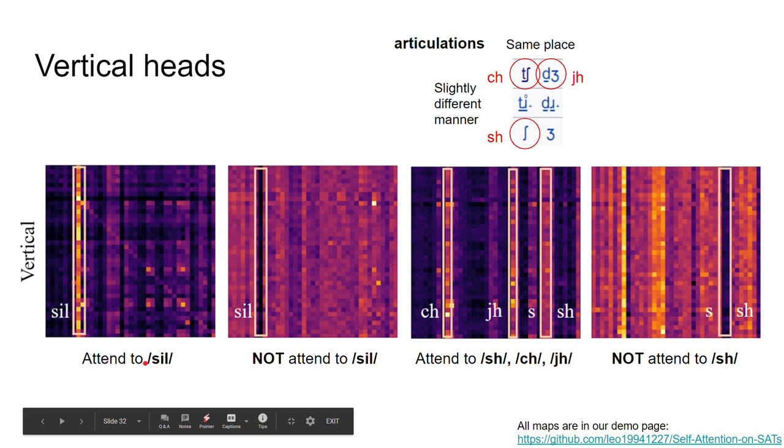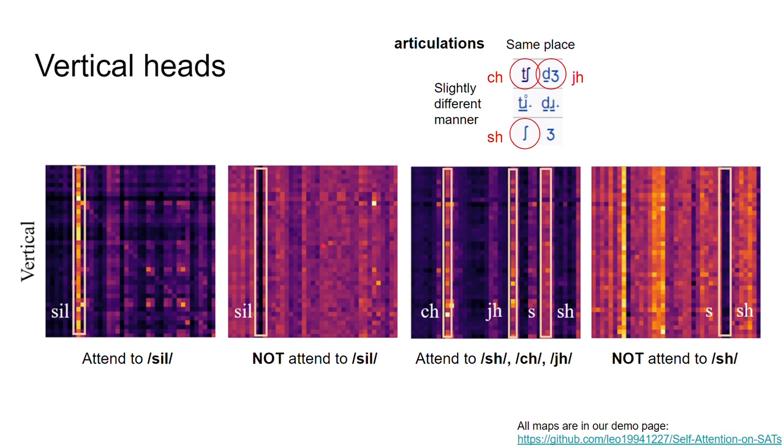As for vertical heads, there's a tendency for focusing on specific phonemes or neglecting them for all queries. The first head attends to silence and the second head always neglects silence. The third head attends to some phones which are articulated very similarly according to the IPA table. Particularly, they are articulated at the same place with slightly different manners. And the last head neglects the phoneme sh.